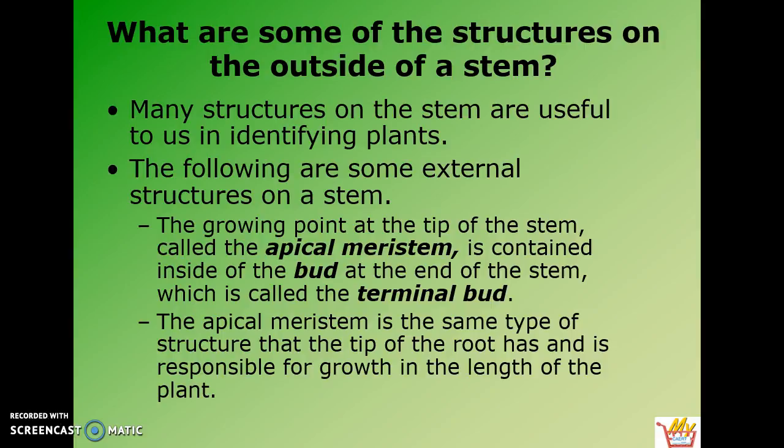Hopefully yesterday you understood fairly well from the activity where you went and picked up your twig — the external parts of the stem. Most of you were able to find the terminal bud, or you can call it the apical meristem, the tip of the stem where you saw a little bud starting to grow. It has the same type of structure that the tip of a root has.